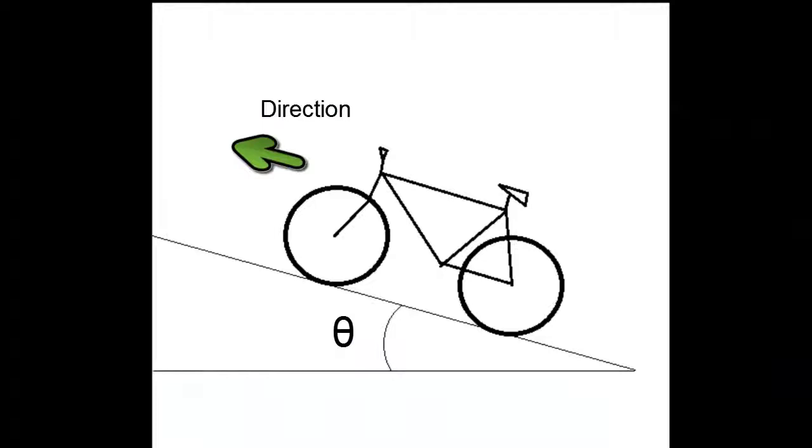The forces acting on the bicycle as we let it come to a stop are the air drag created by the wind and bicycle speed, the rolling resistance between the wheels and the road, and the force of gravity if we are on an inclined path.